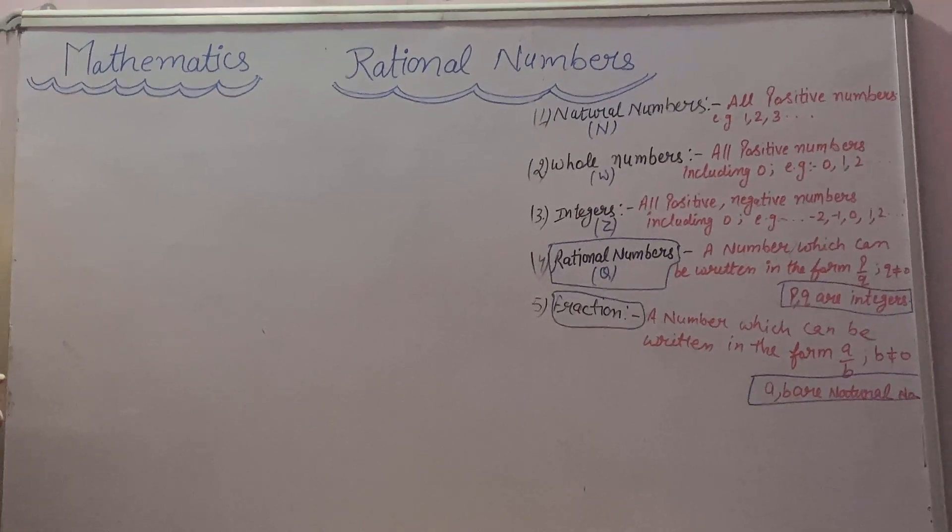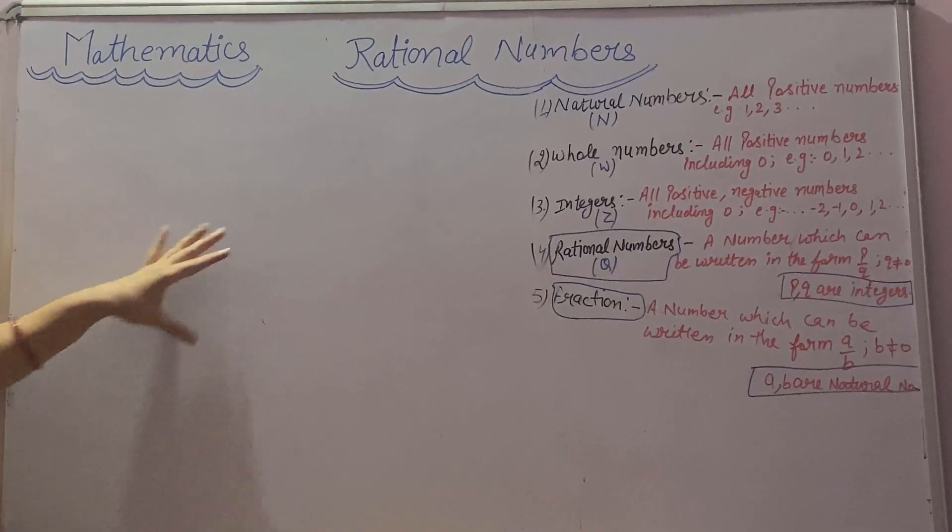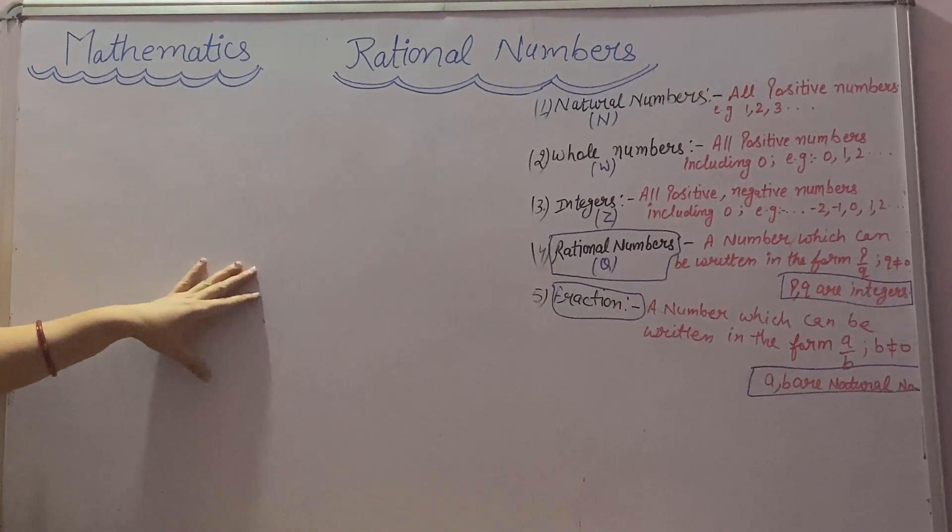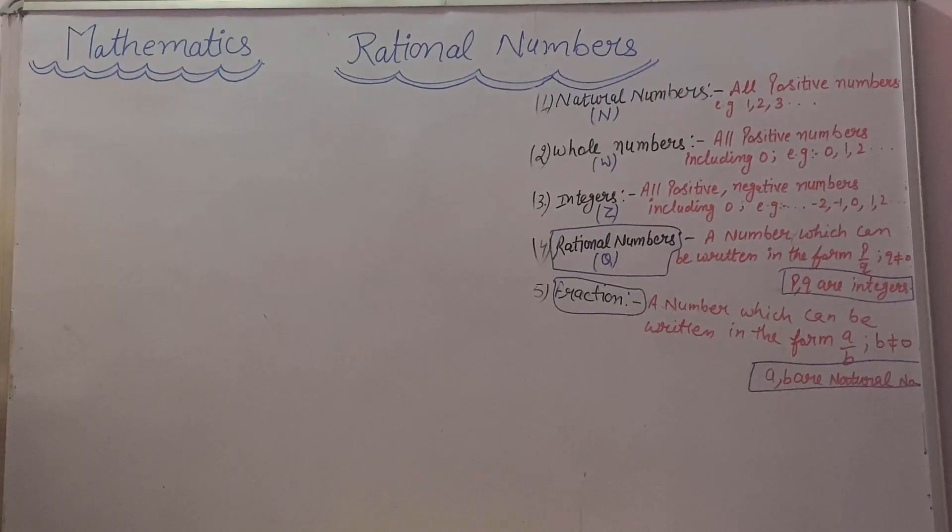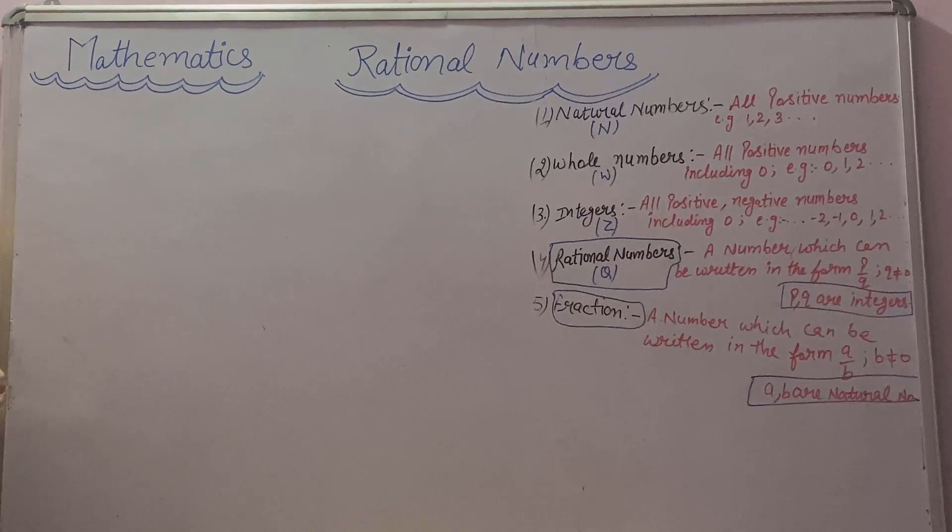Second is whole numbers. All the positive numbers including 0 are called whole numbers. For example 0, 1, 2 up to infinite. And we denote whole numbers as capital W.